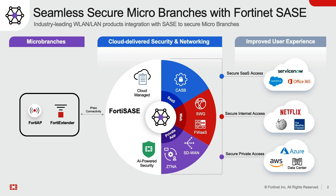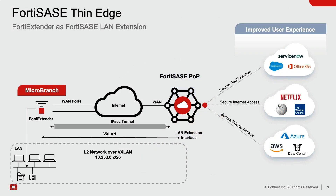The LAN extension feature supports the 4D Extender for micro branches along with the 4D AP for small branch use cases. The 4D Extender or 4D AP, as part of LAN extension, will connect a branch to the nearest 4D SASE PoP utilizing VXLAN over IPSec, and forward all traffic originating from the branch to the SASE PoP for security inspection.